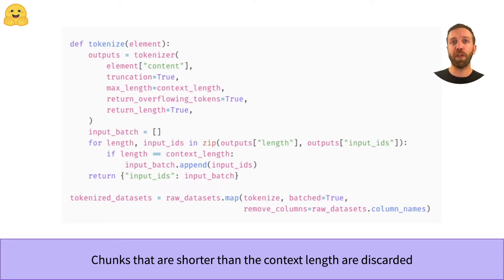In addition, we make sure to use batches and remove the existing columns. We need to remove the existing columns because we can create multiple samples per text, and the shapes in the datasets would not match anymore in that case.